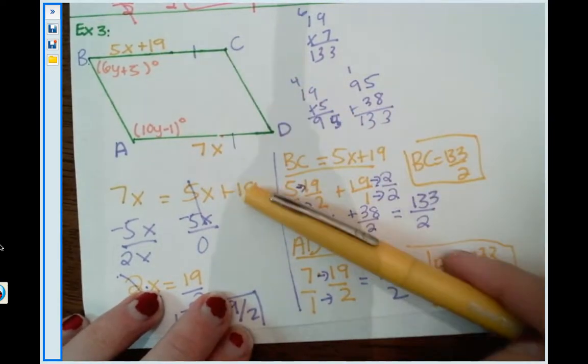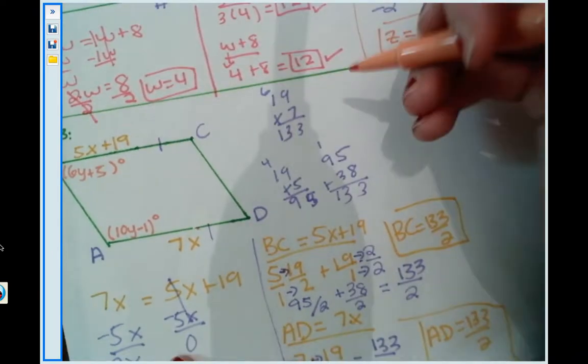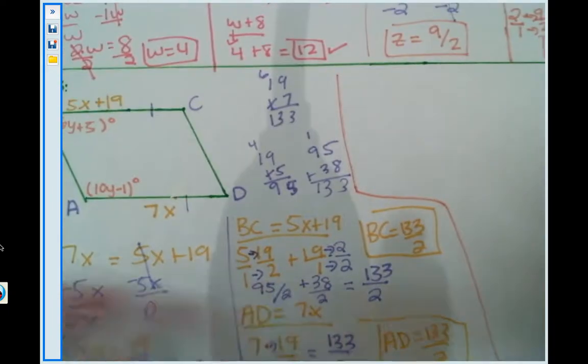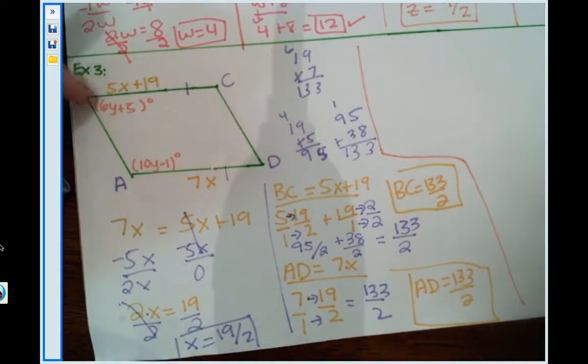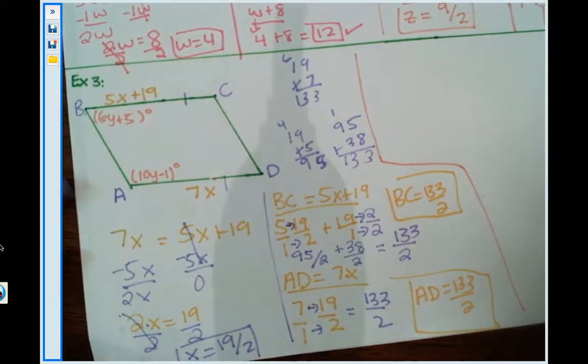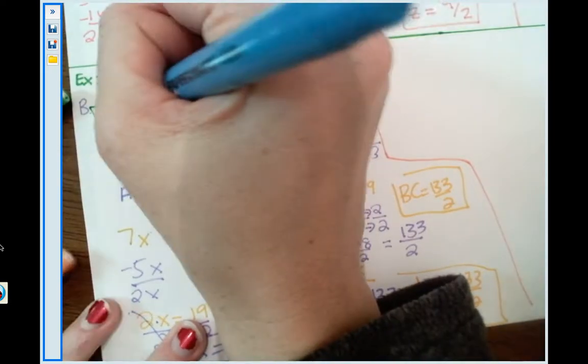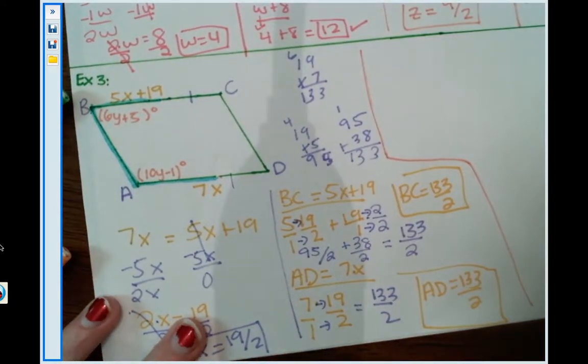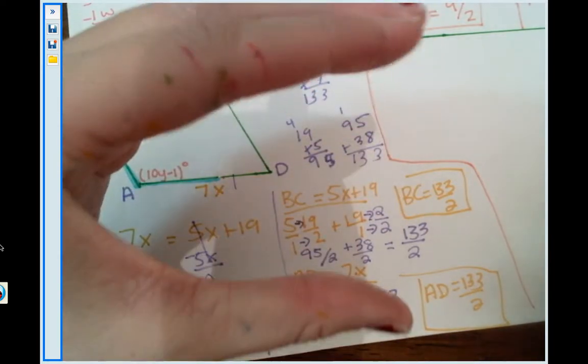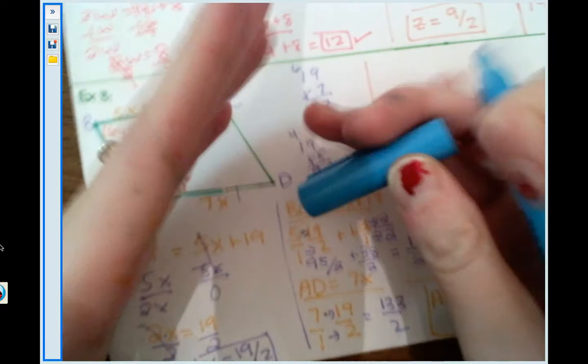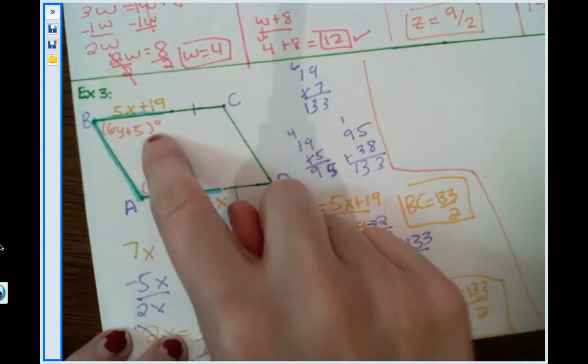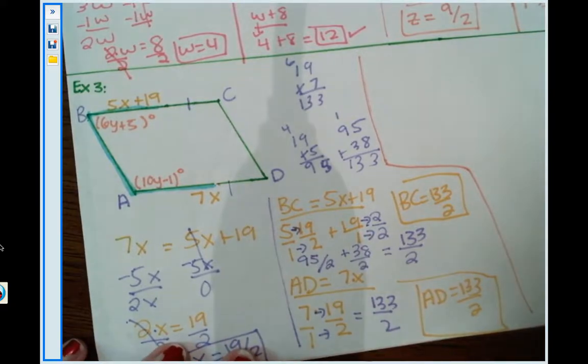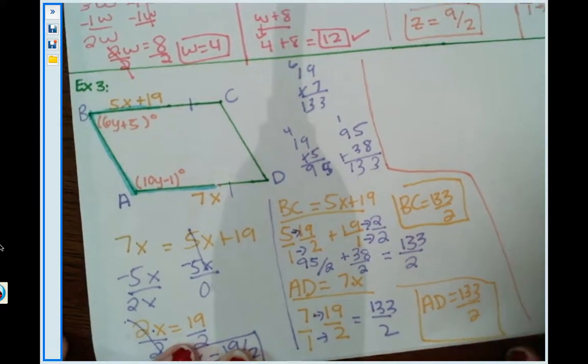But we're not done. So we conquered the side lengths, but now we have to deal with the angle measures. We need to think about different angle properties in a parallelogram. With angle B and A, they're not opposite angles, which means they're not congruent. But let's see which shape these bad boys make when I trace them. When I trace angle B and when I trace angle A, it makes the C shape, which means these are same side interior angles. And same side interior angles are supplementary. So same side interior angles are supplementary, which means they add up to be 180. So I'm going to add B to A, and they should add up to be 180.